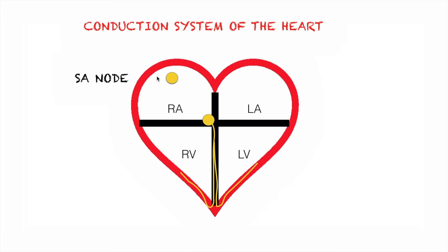From the SA node, the conduction goes to the AV node, or the atrioventricular node. By its name, this can be found within the border of the right atrium and the right ventricle. The AV node is also known as the gatekeeper of the heart, because it gets to decide which impulse to let through. So if the SA node generates a weak impulse or there is a block somewhere, the AV node will perceive that and will decide not to let the impulse go through — instead, it will conduct its own impulse.